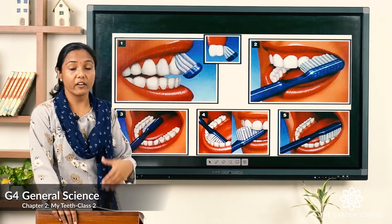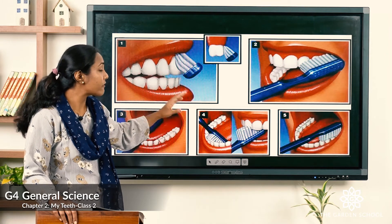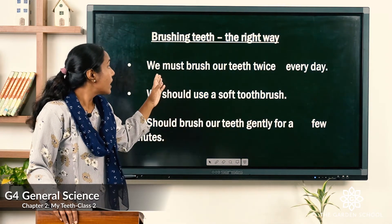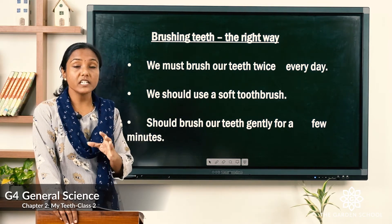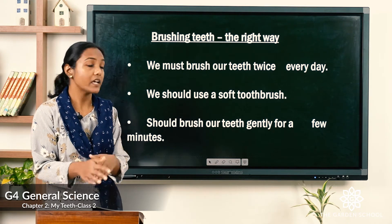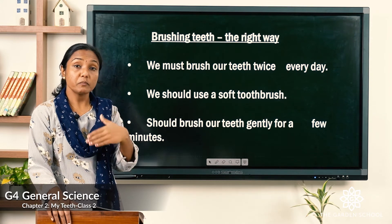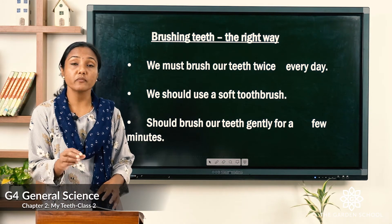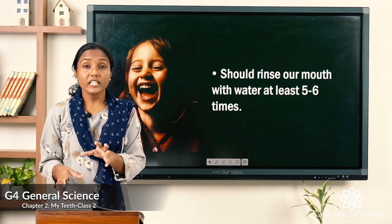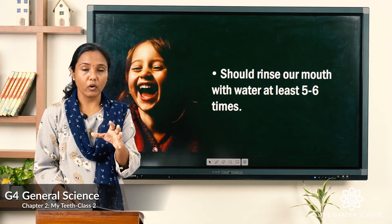When brushing, you can see in the picture that we must brush the front part of the teeth, the sides, the crown part, and also the back side of the teeth properly. We must brush our teeth twice a day — morning and before going to sleep. Use a soft toothbrush, brush gently for a few minutes, and rinse your mouth five to six times with water after brushing.